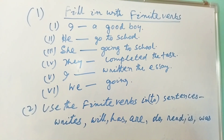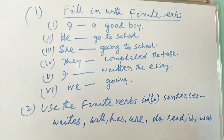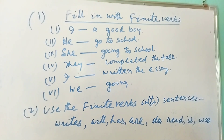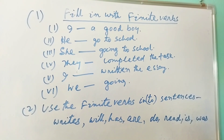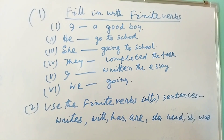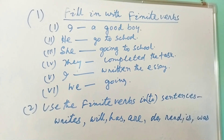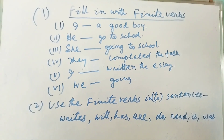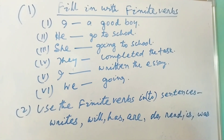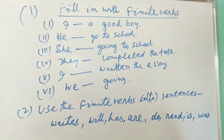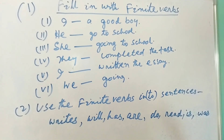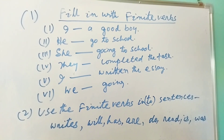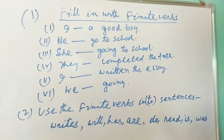Inquisitive learners, I have given you two types of questions on the board. The first is 'Fill in with finite verbs': number one, 'I ___ a good boy'; number two, 'He ___ to school.' You just put the correct verb — whether 'is,' 'are,' 'has,' or 'have.' If you fill these blanks with proper finite verbs, your knowledge of tense will also be corrected.